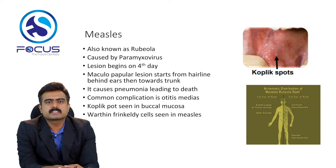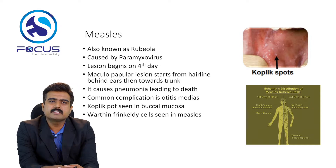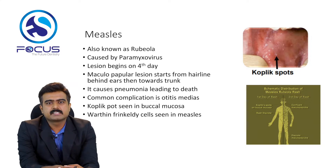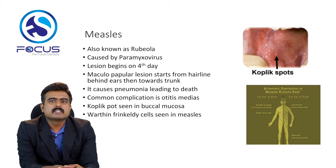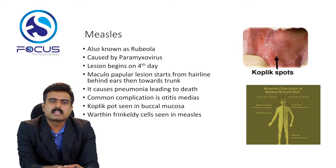The next one is rubella — otherwise known as measles — and it is caused by paramyxovirus. Lesions begin on the fourth day and the maculopapular rash starts from the hairline behind the ears, then spreads towards the trunk. It causes pneumonia leading to death, and one of the most common complications is otitis media. The oral manifestation is Koplik spots, and Warthin-Finkeldey cells are seen in measles.